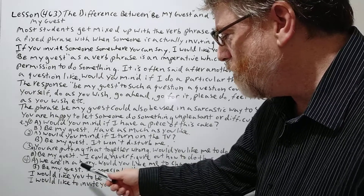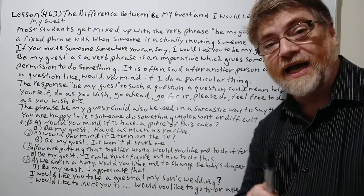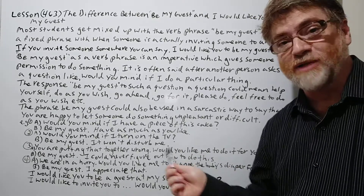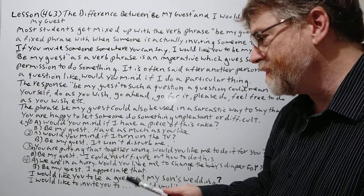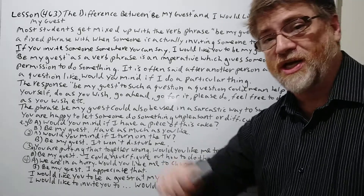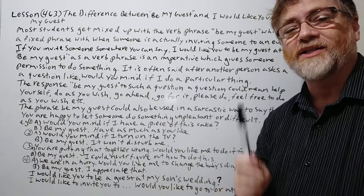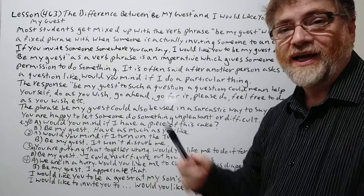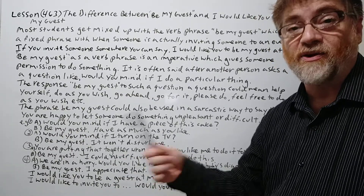Number four: A says 'We are in a hurry. Would you like me to change the baby's diaper for you?' Now this would definitely be something unpleasant. B says 'Be my guest, I appreciate that' — or 'Be my guest, I've changed enough diapers today.' So it's also kind of sarcastic where you're not really saying 'help yourself' in a negative sense — you're saying 'yeah, go ahead, that would be a big help, thanks.'